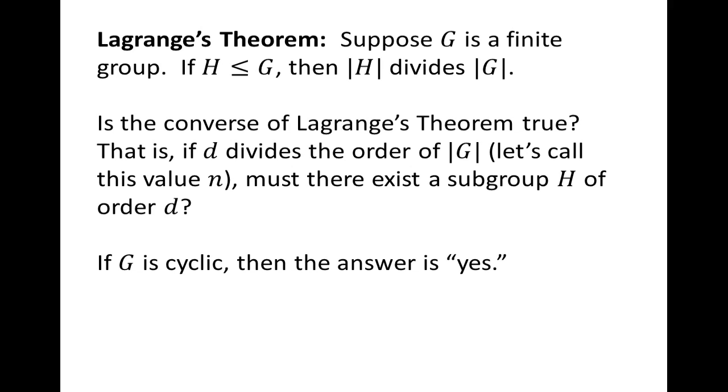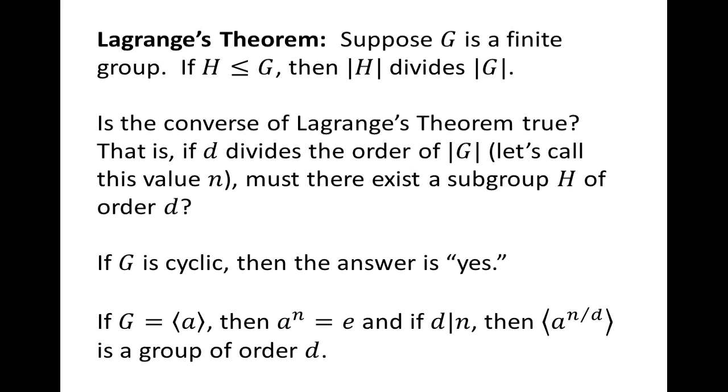Well it turns out that if G is a cyclic group, then yes, we can find subgroups of every order. In fact there's only one subgroup of every order. Suppose G is generated by a and G is cyclic. Then the order of a is n because G is of order n. If you take a to the n divided by d and look at the cyclic subgroup generated by that, it will be of order d.